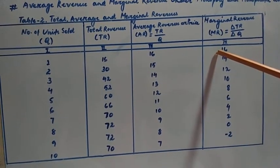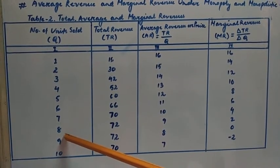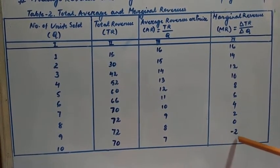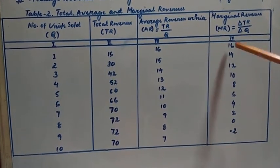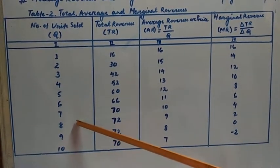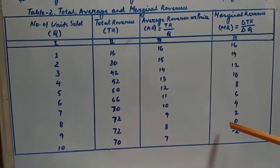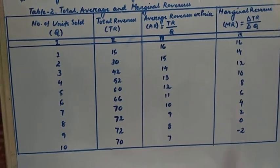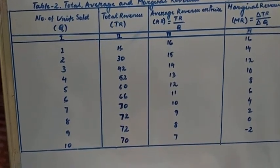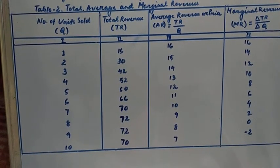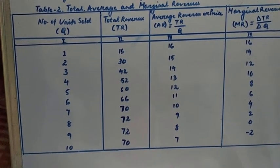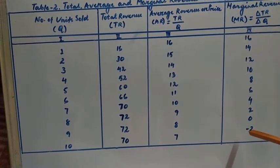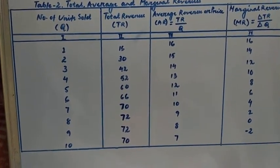As the number of units sold increases from 9 to 10, marginal revenue becomes negative. Total revenue declines from rupees 72 to rupees 70, and therefore the marginal revenue is negative, equal to minus 2. So as number of units sold increases, marginal revenue declines, and in all forms of imperfect competition the average revenue curve slopes downward.